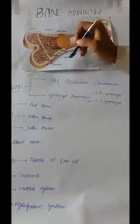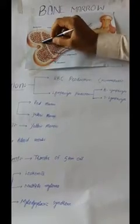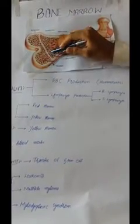Bone marrow. In Latin words, it is called medulla ossea. Bone marrow is a flexible and spongy tissue in the interior of the bones.